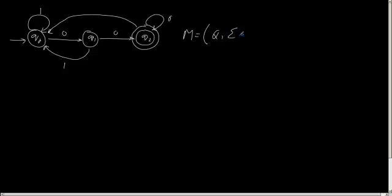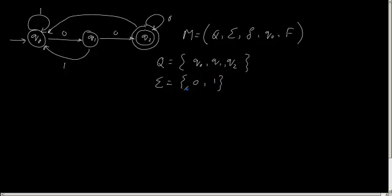Of Q, sigma, delta, Q0 and F. What is my Q then? Q is nothing but {Q0, Q1, Q2}. What is my sigma? That is the alphabet set. It is already given, that is {0, 1}. What is my starting state? Q0 is Q0 here. And what is my final state? F is nothing but {Q2}.